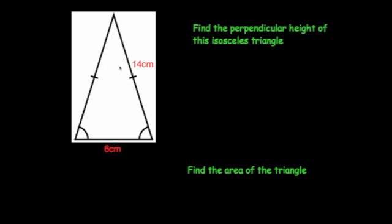We're now going to look at isosceles triangles. Here we've got an isosceles triangle — it has two sides of the same length and two angles of the same size. The base is equal to 6 centimetres and the two equal sides are 14 centimetres. We've been asked to work out the perpendicular height — the distance from the base to the highest point. To do this with an isosceles triangle, we're going to cut it in half and dissect it into two right-angled triangles.